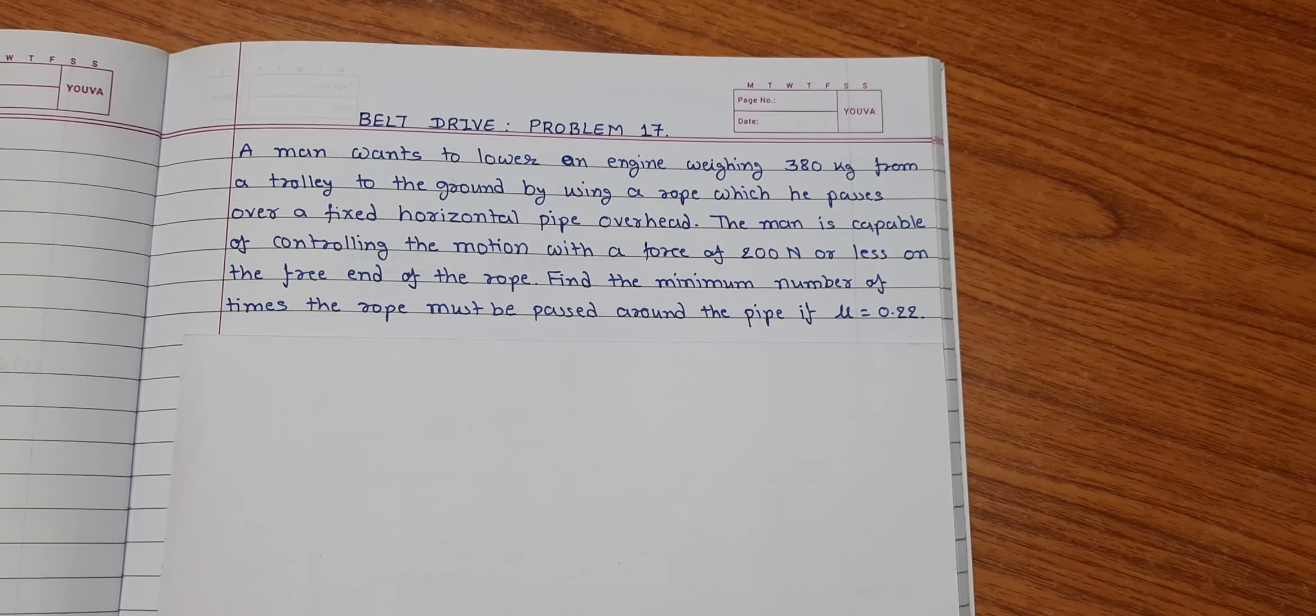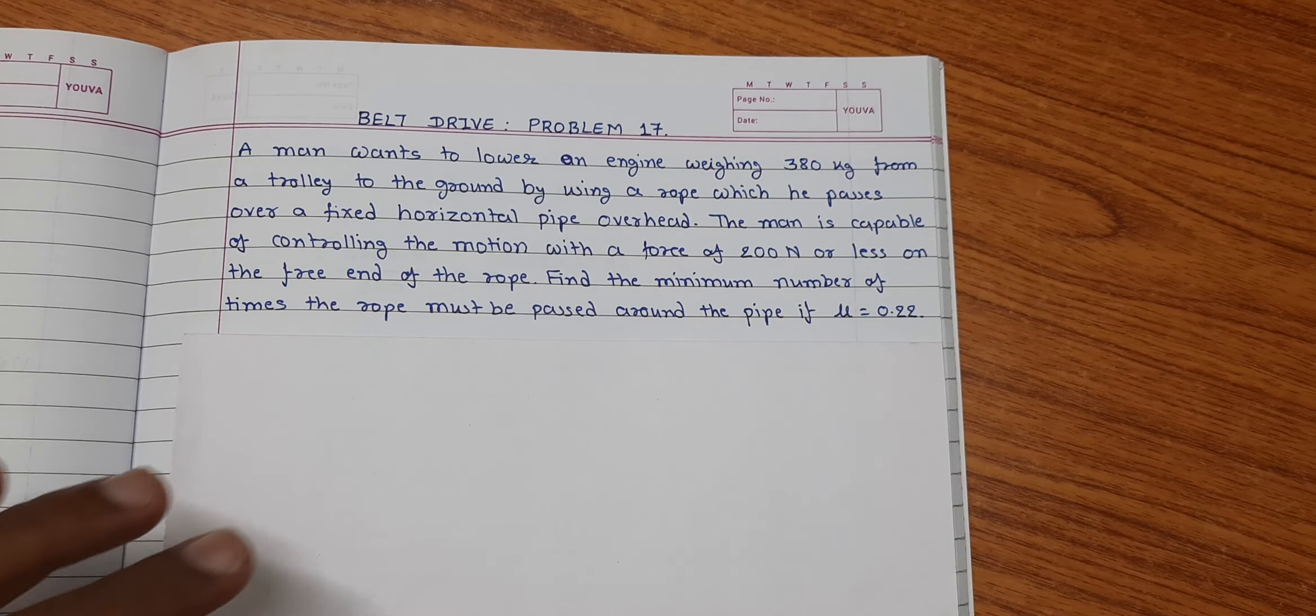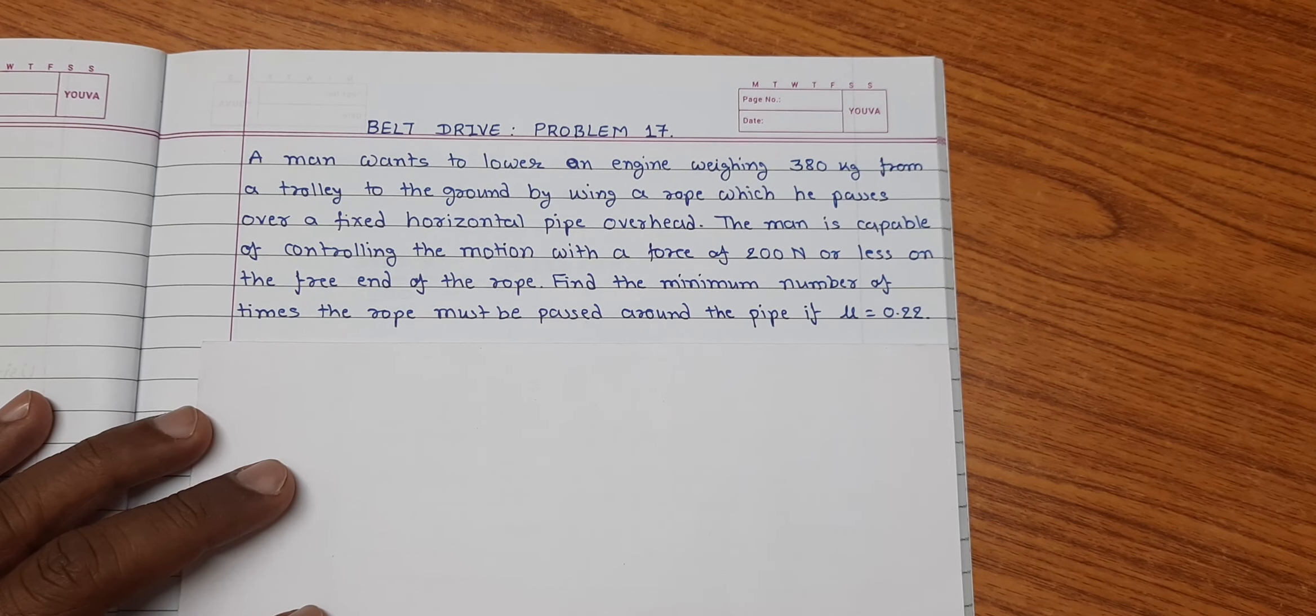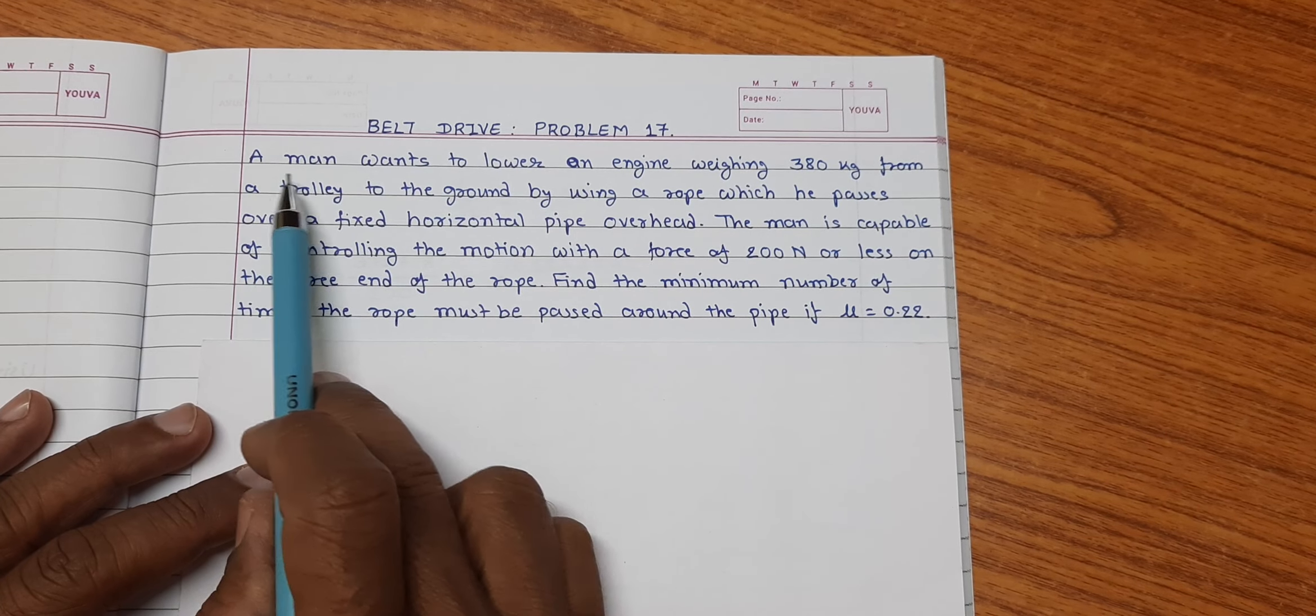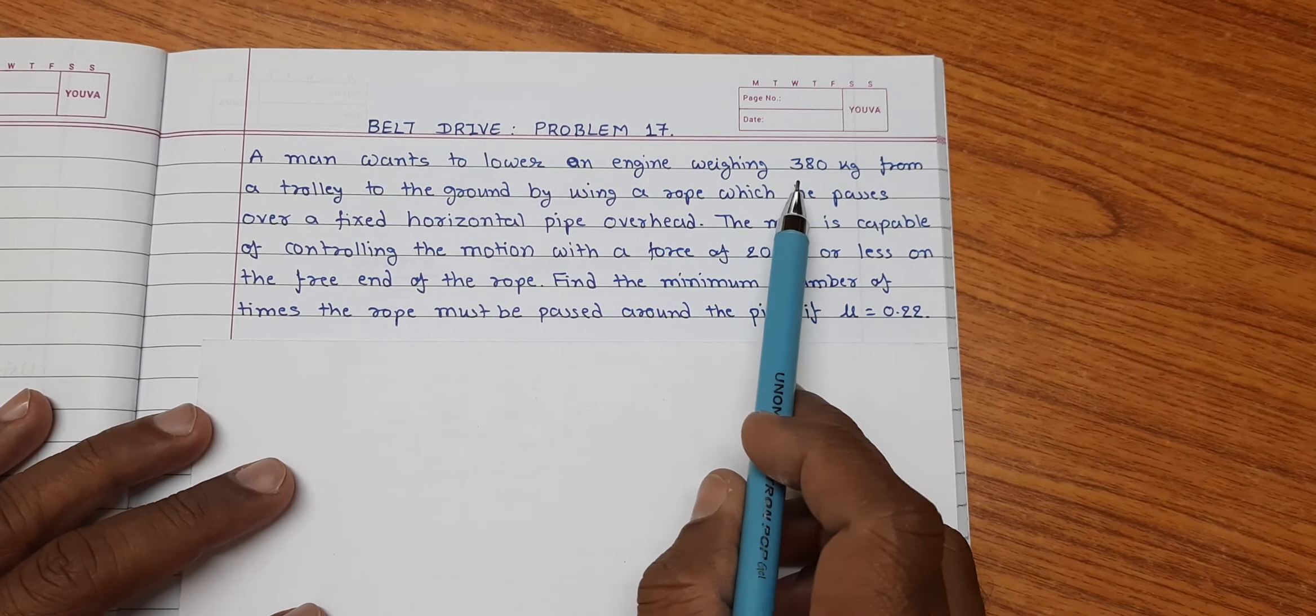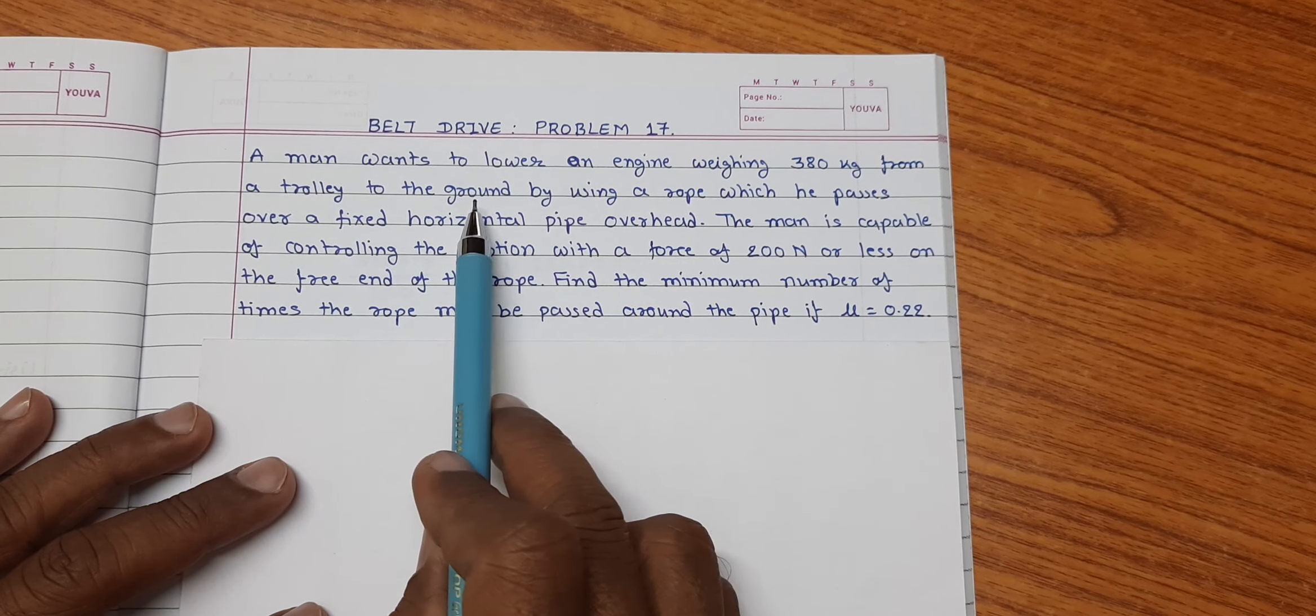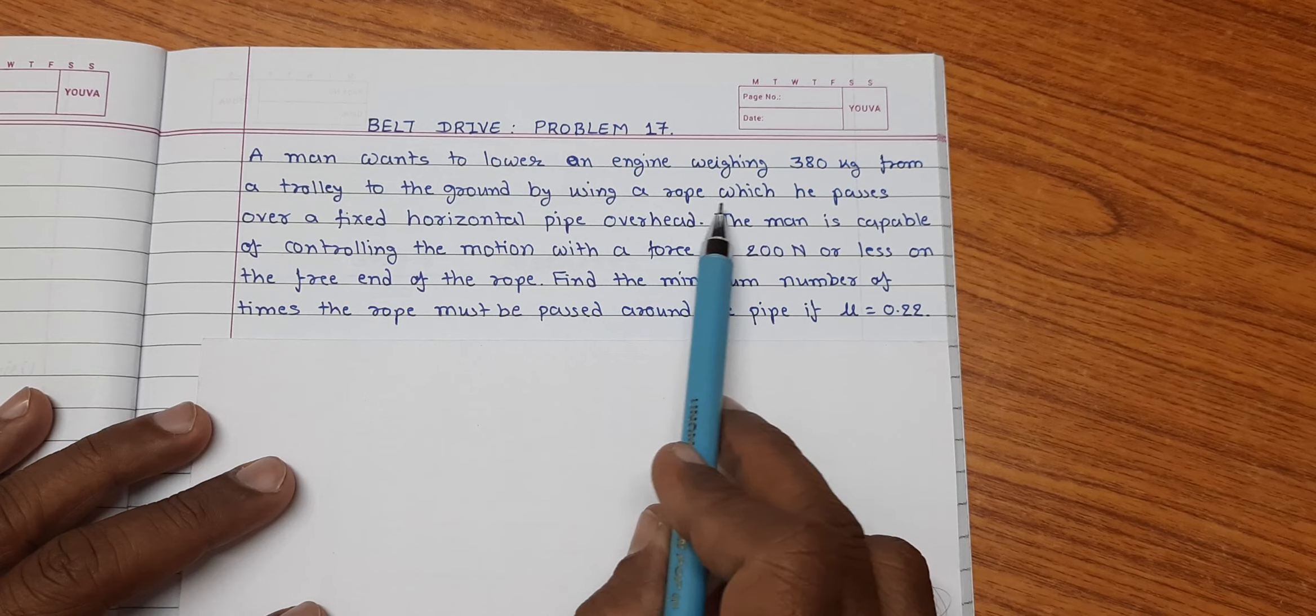Dear friends, welcome to the next problem of Weltry at problem number 17. A man wants to lower an engine weighing 380 kg from a trolley to the ground by using a rope.